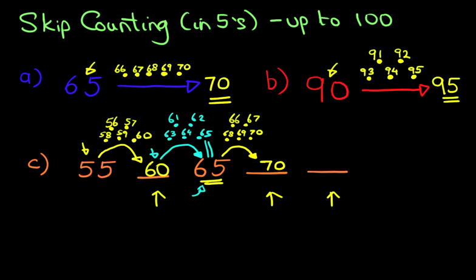I'm just going to change colors for this. So we start at 70 and there's our arrow. How many dots are there? We're counting in fives, so therefore there's got to be five dots.